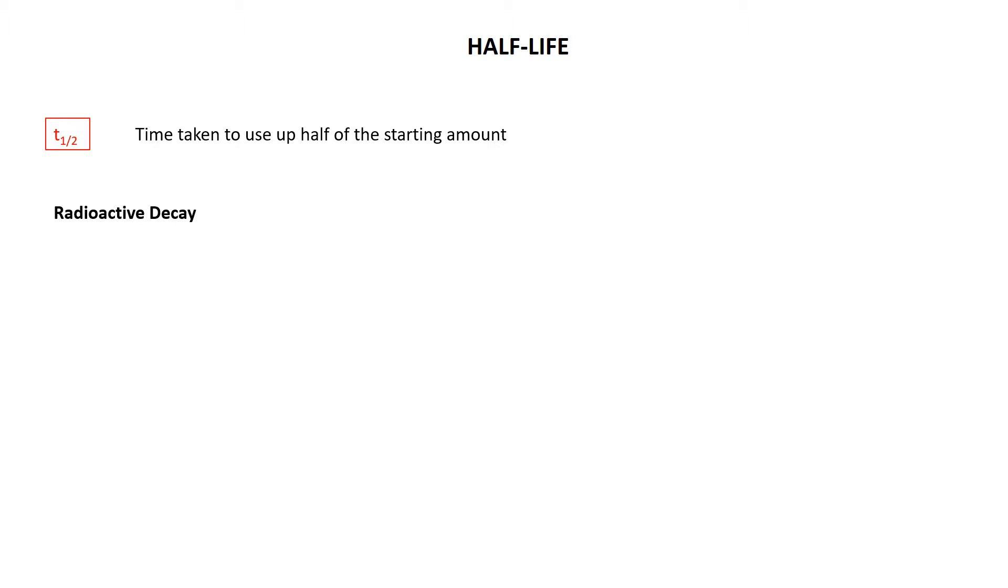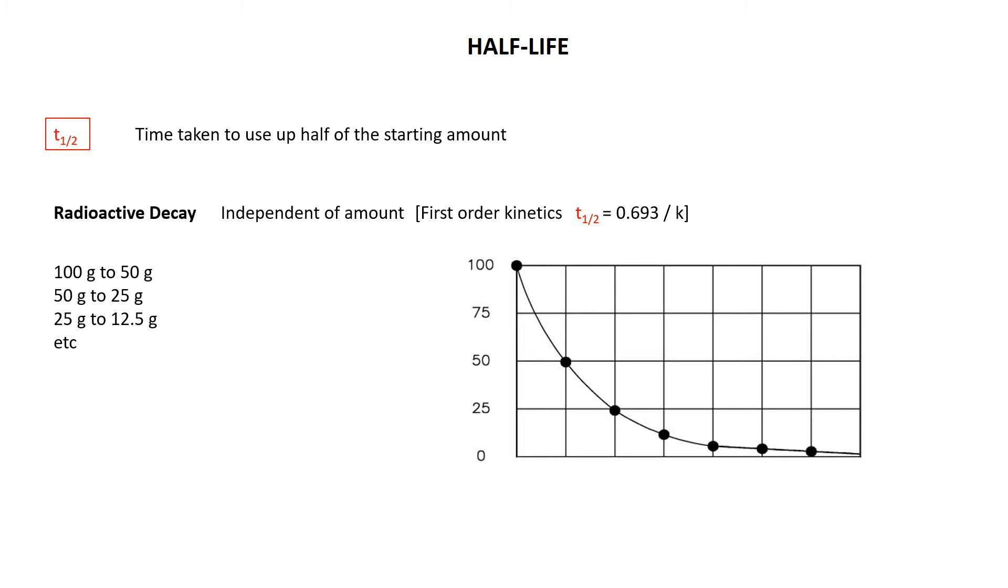Now, what's nice about radioactive decay is that the half-life is independent of the amount that you have. It's first-order kinetics, and there's a relationship between the half-life and the rate constant, for those of you who looked at the kinetics extension material. For those of you who didn't, what we're saying is if you've got 100 grams and you go to 50 grams, and then 50 to 25, and then 25 to 12.5, in other words, each time you're halving what you start with, as shown in this graph here, the time taken is the same. So each one of these little boxes is representing a half-life.